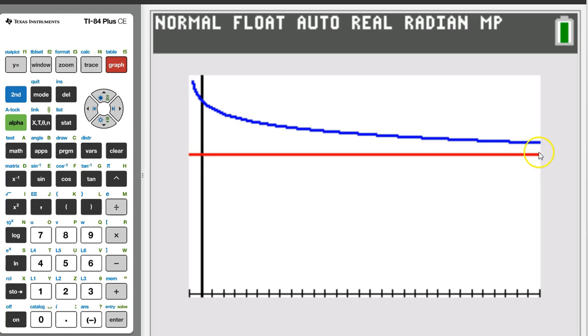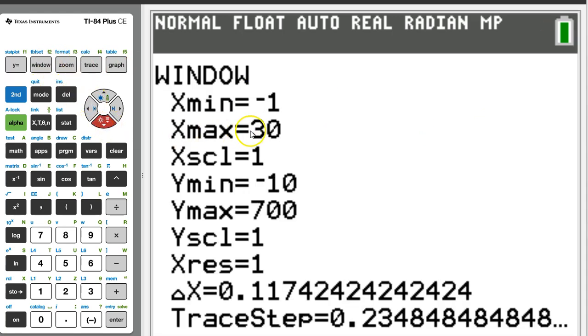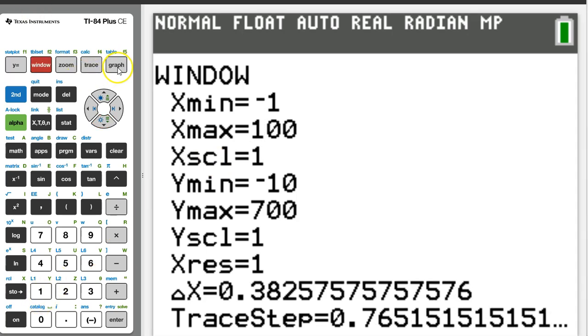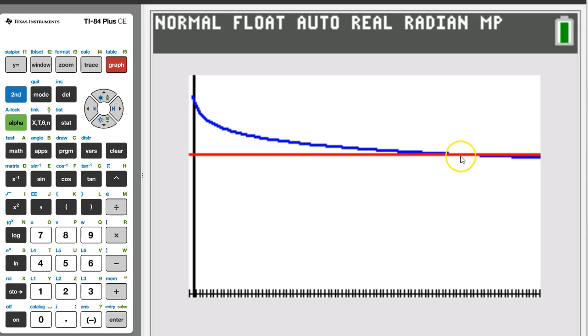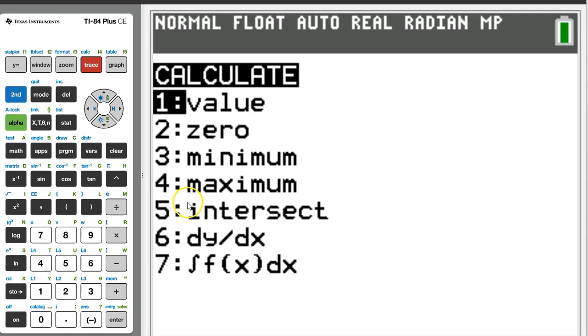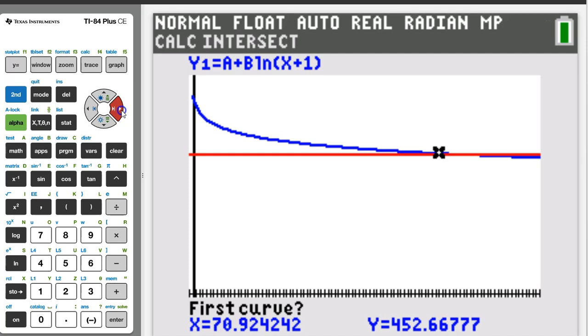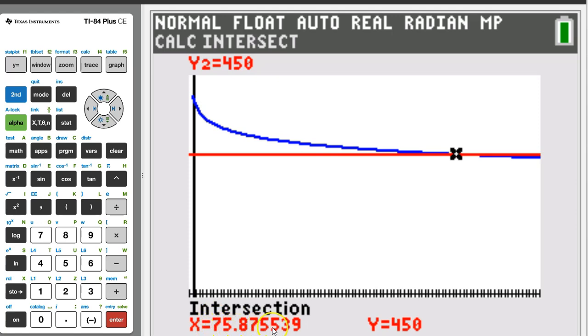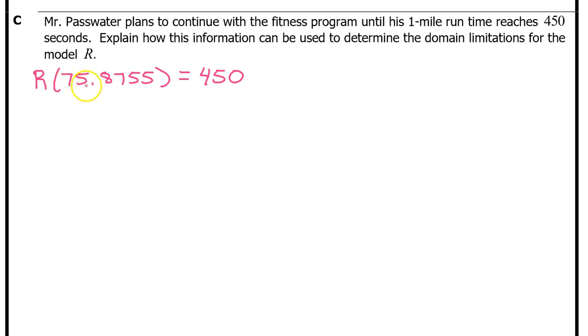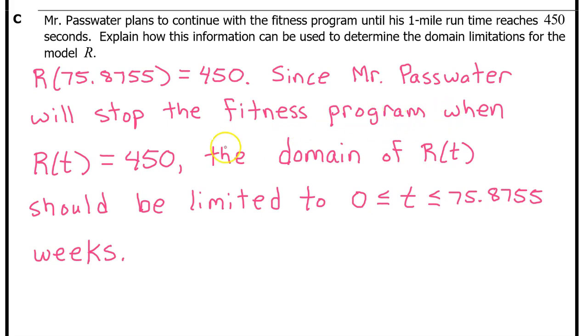Hit y equals and enter 450 as y2. Hit graph and let's see what we've got. The intersection point is going to occur way off the screen to the right. So, we need to adjust the window and we need to increase xmax by a lot. Let's make it 100. The intersection point is right here. Let's find it by hitting second trace and choosing option 5 for intersect. Move the pointer close to the point of intersection and hit enter three times. 75.8755. We just saw that R(75.8755) = 450. Since Mr. Passwater will stop the fitness program when R(t) = 450, the domain of R(t) should be limited to the interval from 0 to 75.8755 weeks.